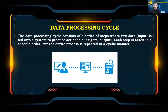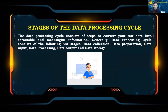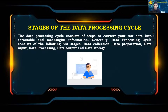The data processing cycle consists of a series of steps where raw data (input) is fed into a system to produce actionable insights (output). Each step is taken in a specific order, but the entire process is repeated in a cyclic manner. Generally, the data processing cycle consists of six stages: data collection, data preparation, data input, data processing, data output, and data storage.